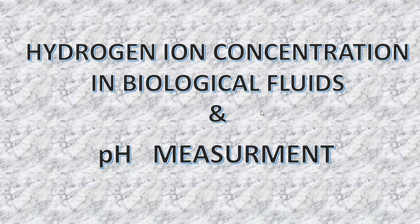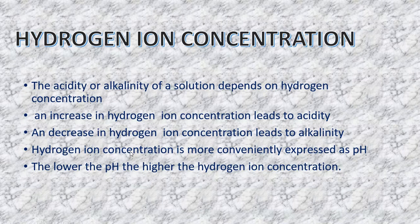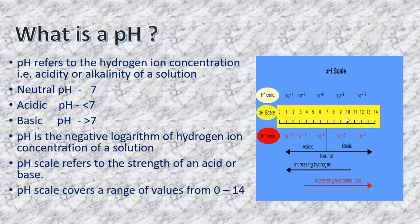The acidity or alkalinity of a solution depends upon hydrogen ion concentration. An increase in hydrogen ion concentration leads to acidity, and a decrease leads to alkalinity. For convenience, this hydrogen ion concentration is expressed as pH. The lower the pH, the higher the hydrogen ion concentration.